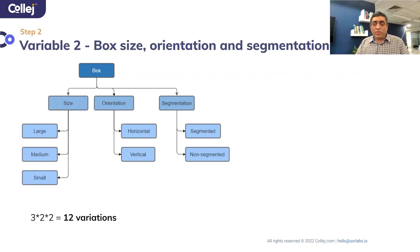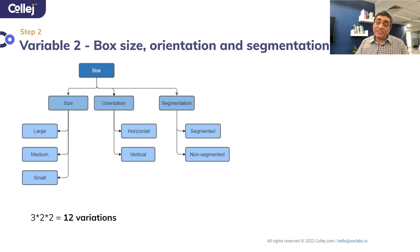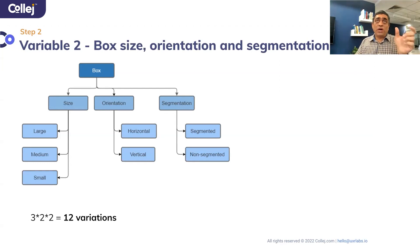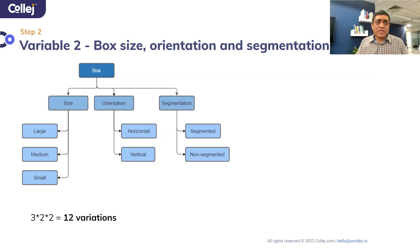Let's look at box size. The box doesn't have to be the same size every time — you could have a large, medium, or small box. For simplicity, the box can be aligned horizontally or vertically. You can also have it segmented — meaning you break the box into smaller pieces, such as one big box versus three small boxes, or a combination of sizes. Those are different variations. Looking at size, orientation, and segmentation, you have 12 variations just from the box perspective.